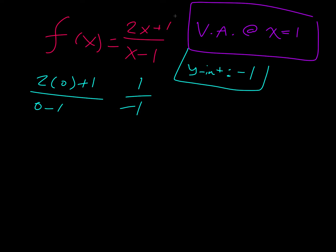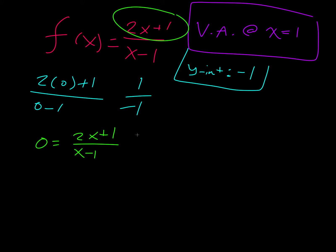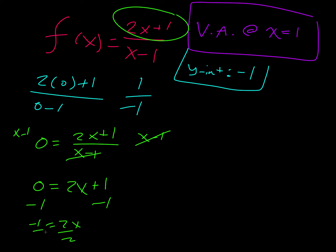The reason why we only worry about the top: for f(x) = (2x+1)/(x-1), the first step would be to multiply both sides by x minus 1. That cancels the denominator, but x minus 1 times 0 is still 0. So there is a shortcut where we can just set the top equal to 0 and be done. So we subtract 1: negative 1 equals 2x, divide by 2, and so we have an x-intercept at negative 1 half.